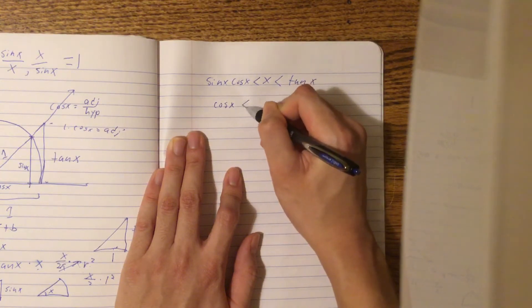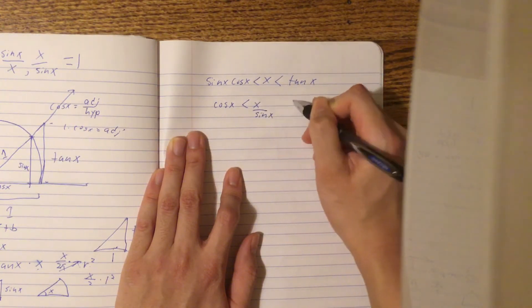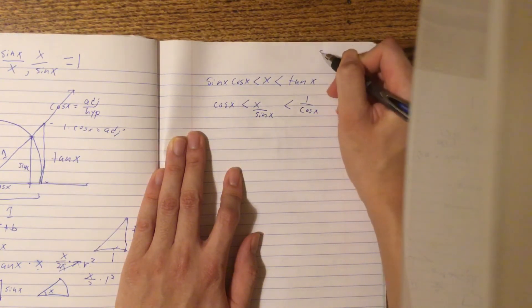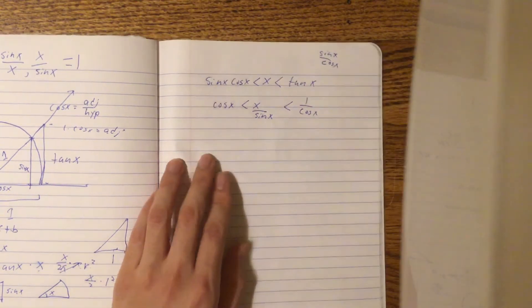And then we divide sine of x by everything. So, we get cos x is less than x over sine x, which is less than 1 over cos x. Because tan x is just sine x over cos x, right? So, if you divide this by sine x, you just get 1 over cos x.